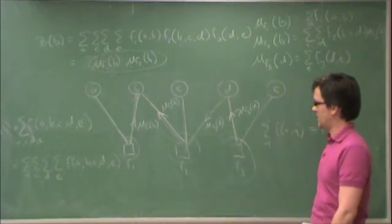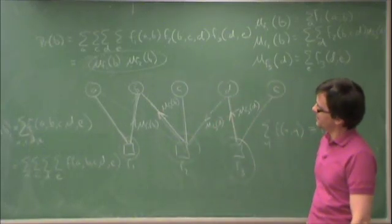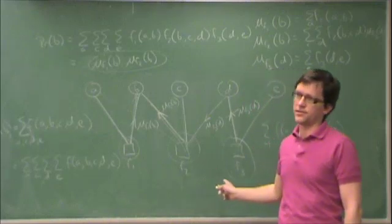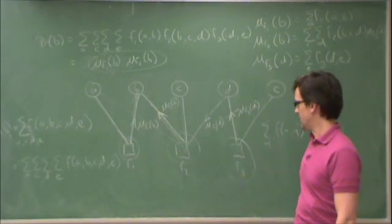Like this? Very cool. Yes, so this method will calculate the probability of B exactly, but only if the graph contains no cycles. So here, there's a cycle.